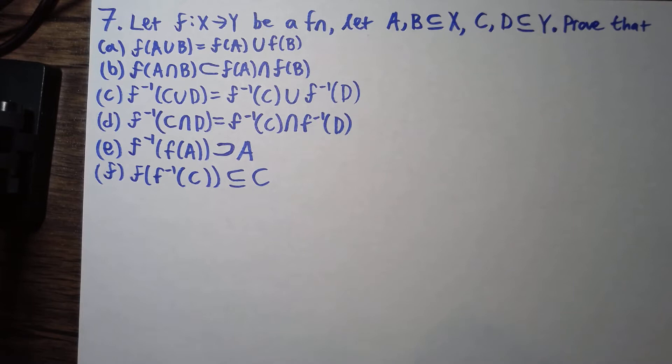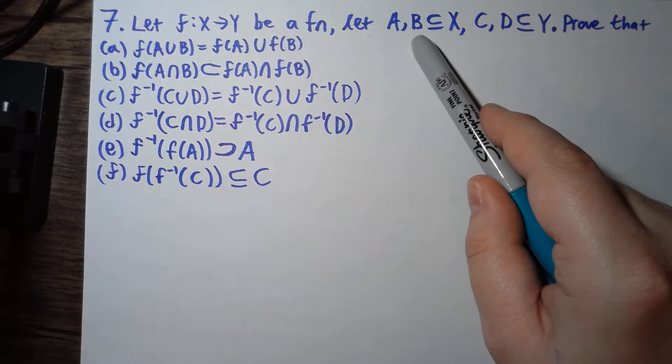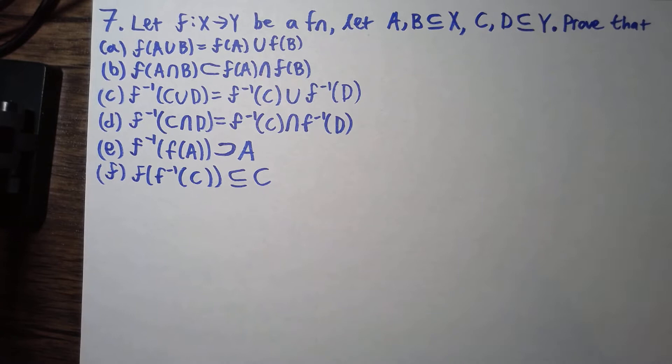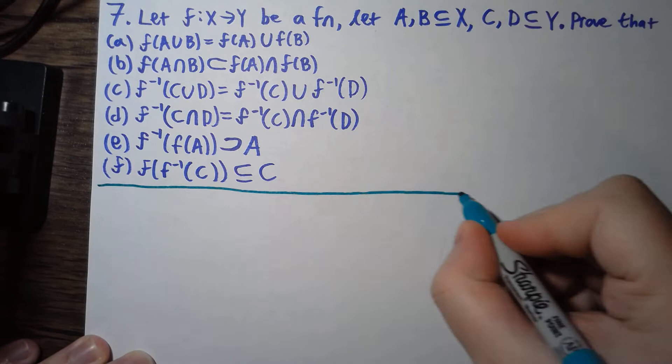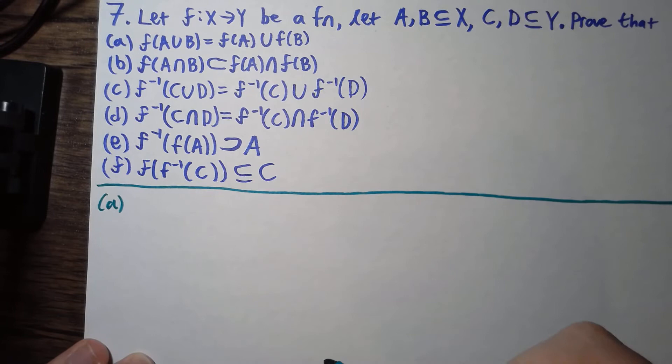We're doing problem seven out of chapter one of Russell Lynch's Analysis. We have a function f from X to Y, and we're going to say A and B are subsets of X, C and D are subsets of Y, and we want to prove the following subset equality statements.